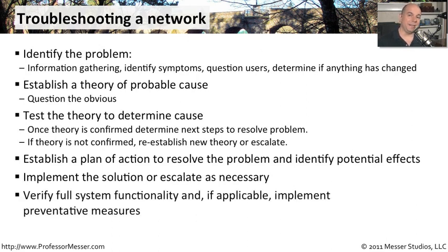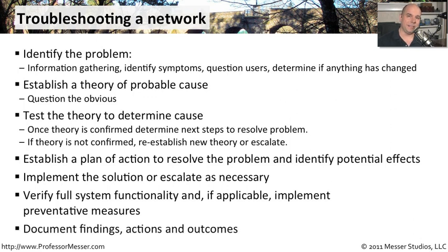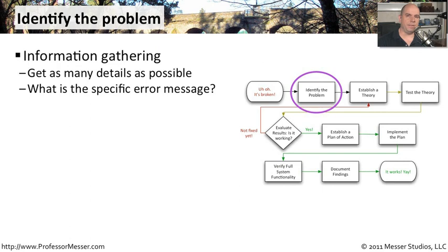And once we've rolled it out, we need to make sure that whatever we have discovered, whatever we think we fixed, has really solved the issue. And then once we're sure that we've solved it, we can document exactly what we've done so later on we can go back and rediscover this if it ever happens again. The first step of identifying the problem becomes extremely critical, especially on very complex issues. We want to be able to gather as much information as possible, and if there is an error message or a specific type of output, this becomes very, very critical.